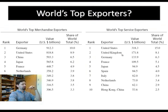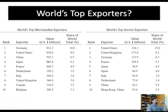Who are the world's top exporters? Not surprisingly, Germany is number one, followed by the United States, then China, Japan, France, and so on. Many people would think China is the top exporter these days, but China is still a fairly smaller exporter than the United States in dollar value terms.